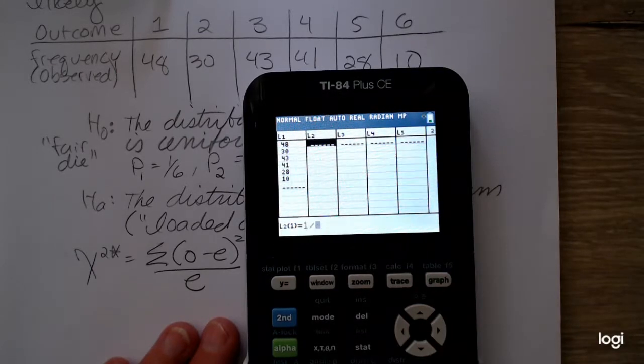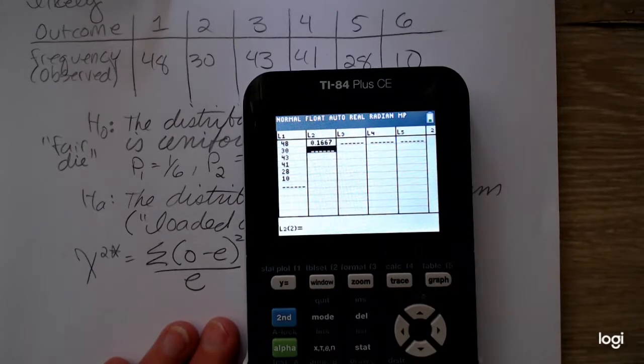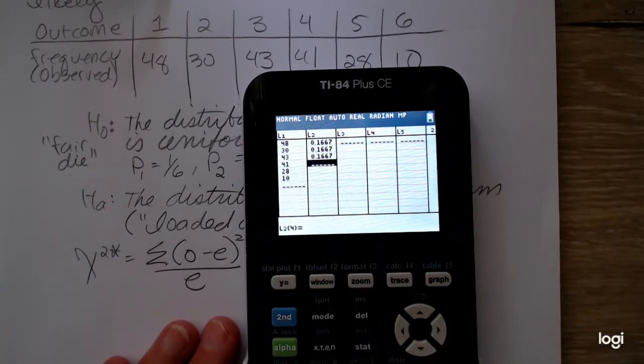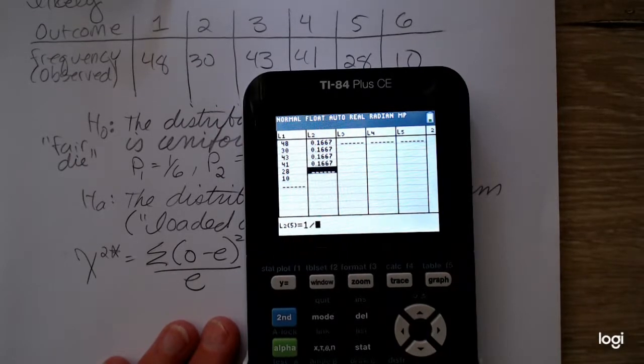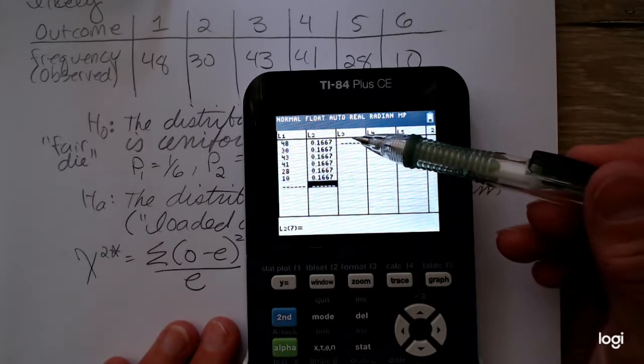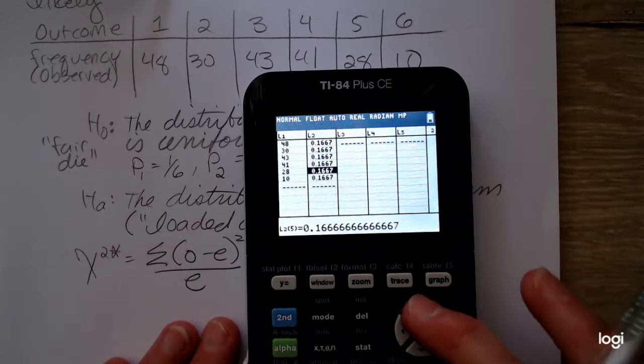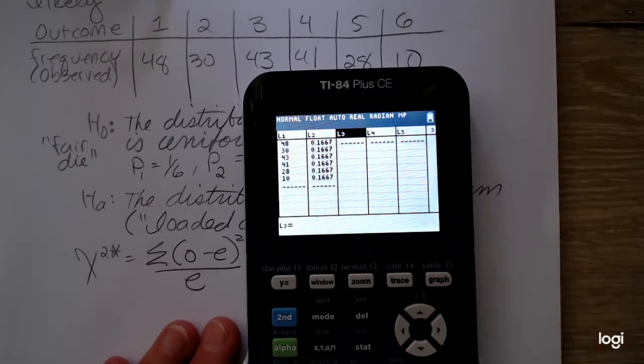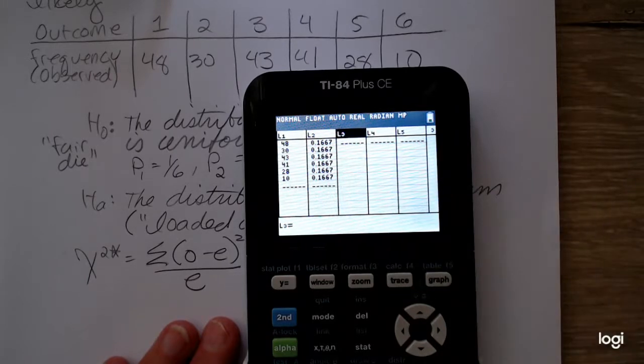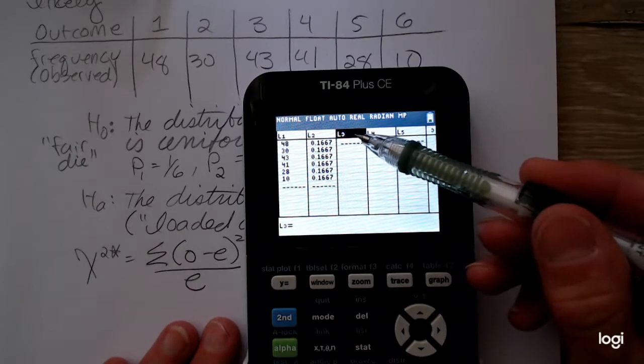So I'm going to put in the expected proportion for each category. In other words, 1 out of 6 for each outcome, and it's the same because on a fair die, each outcome is equally likely. And then I want to create a third list of counts. The die was rolled 200 times, so each expected count is going to be 200 times 1/6.